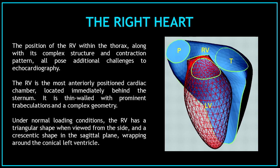The position of the right ventricle within the thorax, along with its complex structure and contraction pattern, all pose additional challenges to echocardiography. The right ventricle is the most anteriorly positioned cardiac chamber, located immediately behind the sternum. It is thin-walled with prominent trabeculations and a complex geometry. Under normal loading conditions the right ventricle has a triangular shape when viewed from the side and a crescentic shape in the sagittal plane, wrapping around the conical left ventricle.